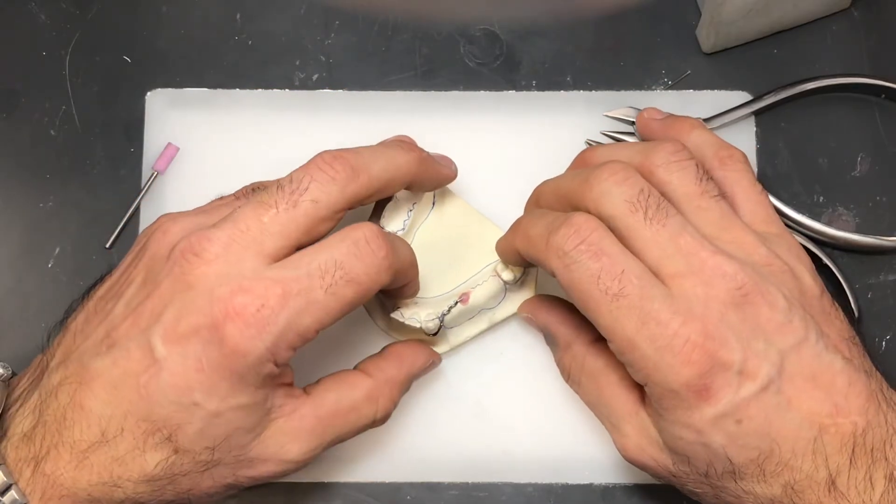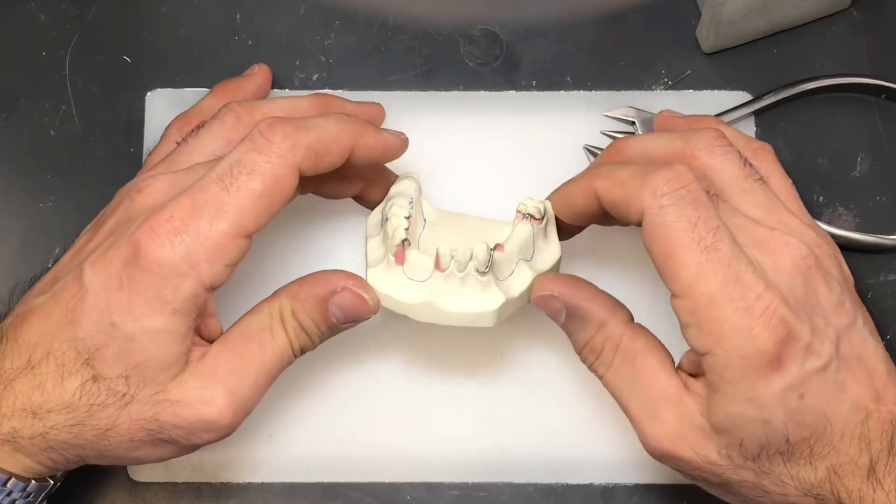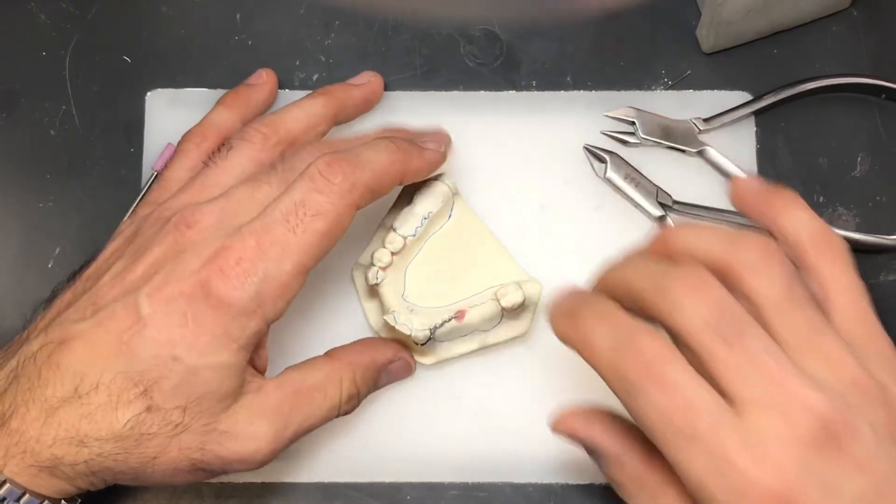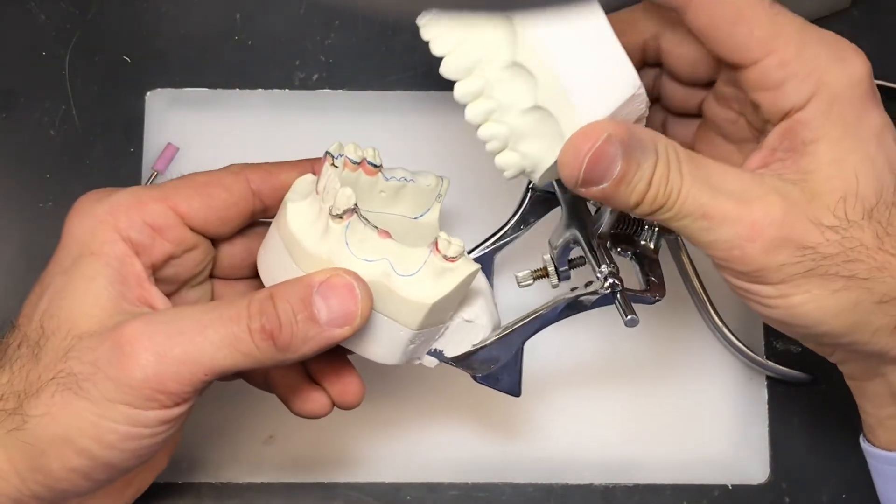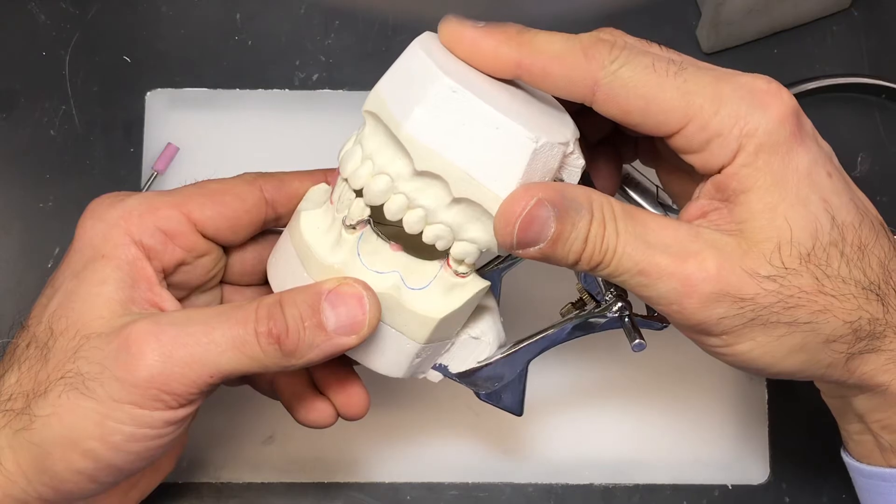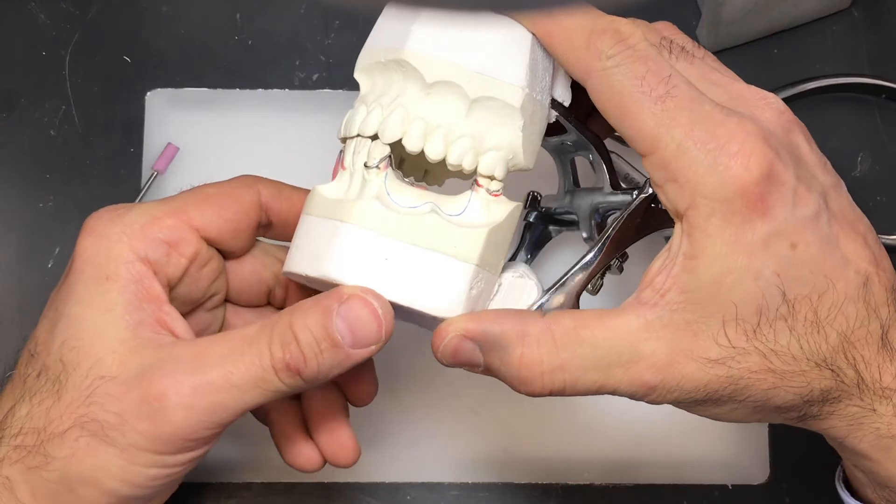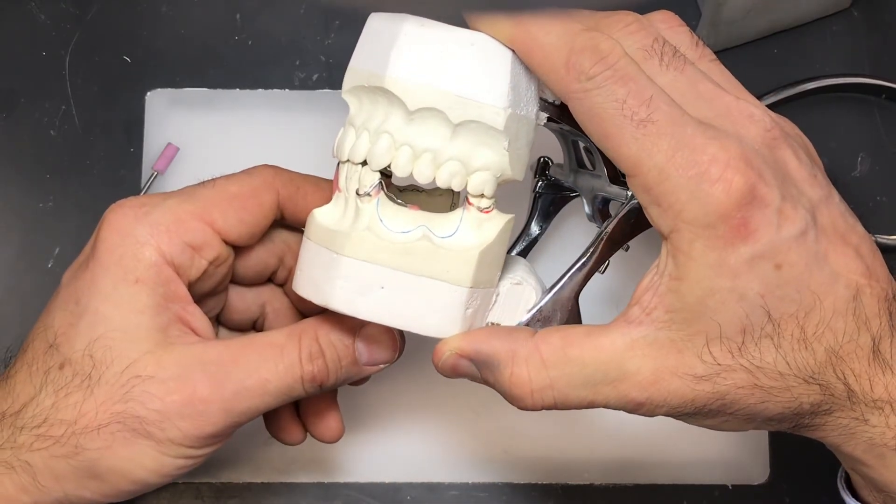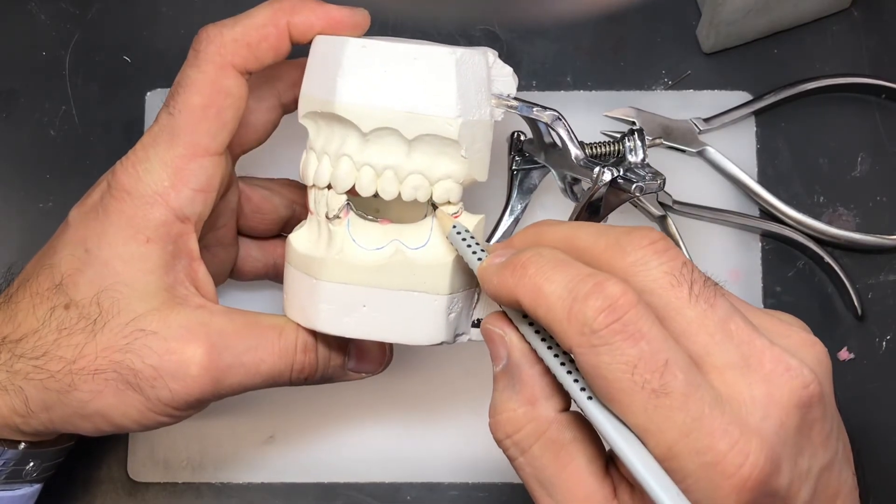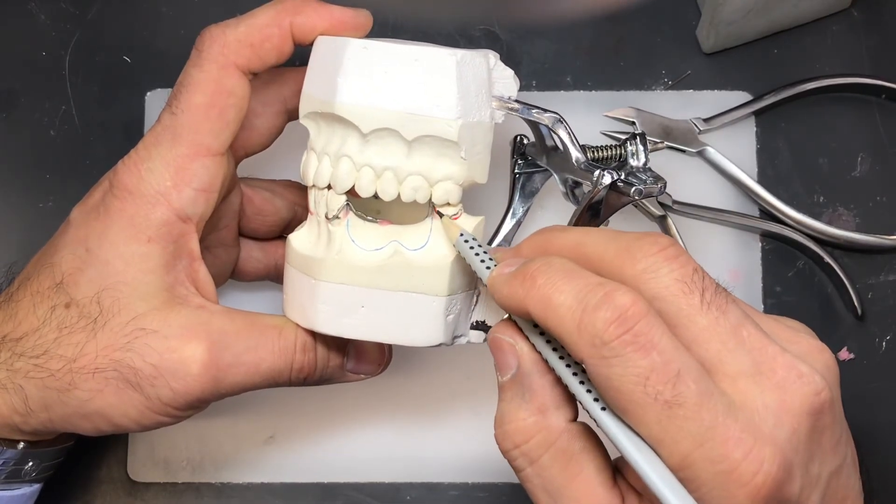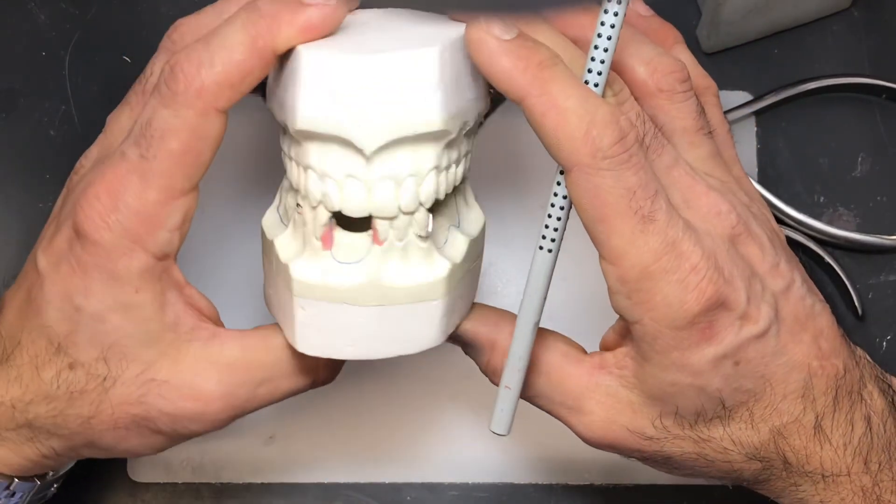We'll see how everything fits and looks up against the opposing. Once more on that subject, make sure that you put your model back onto your mounting and assess that you have clearance of the opposing arch so there's no interference with the wire. Hopefully you have some space now between the wire and the opposing dentition so you can cover the wire with the prosthetic tooth and it looks a little more aesthetically pleasing.